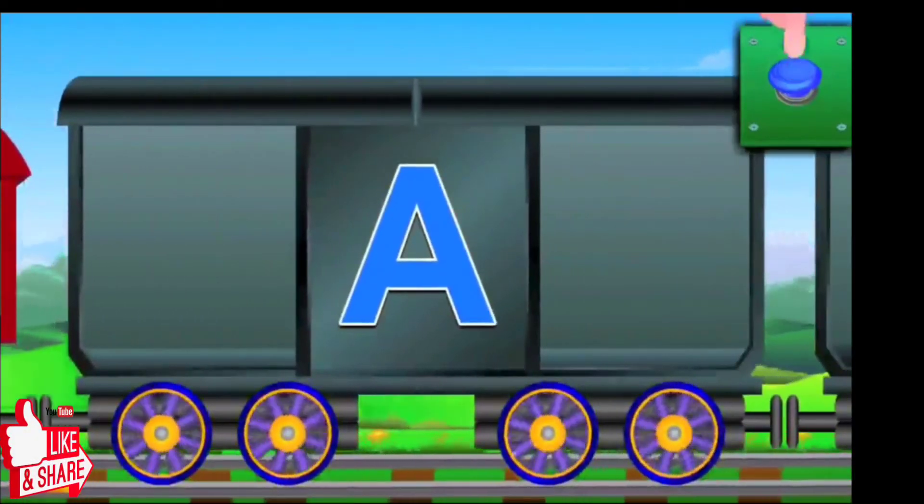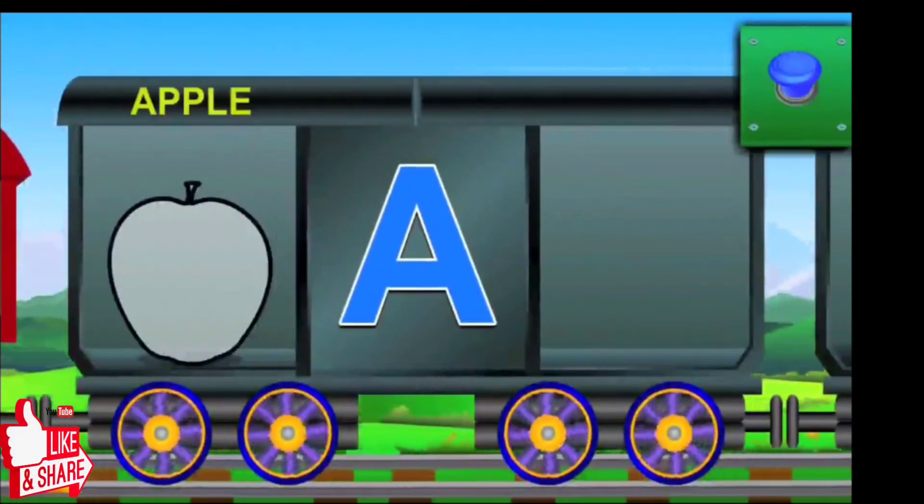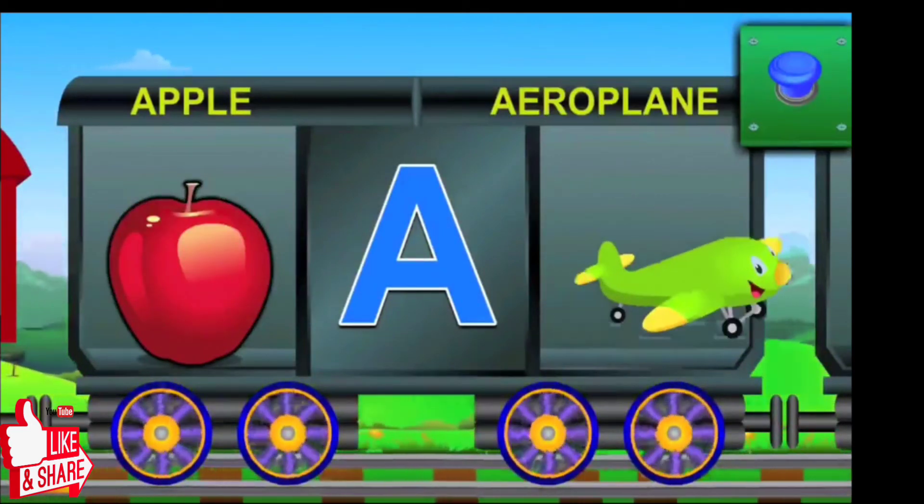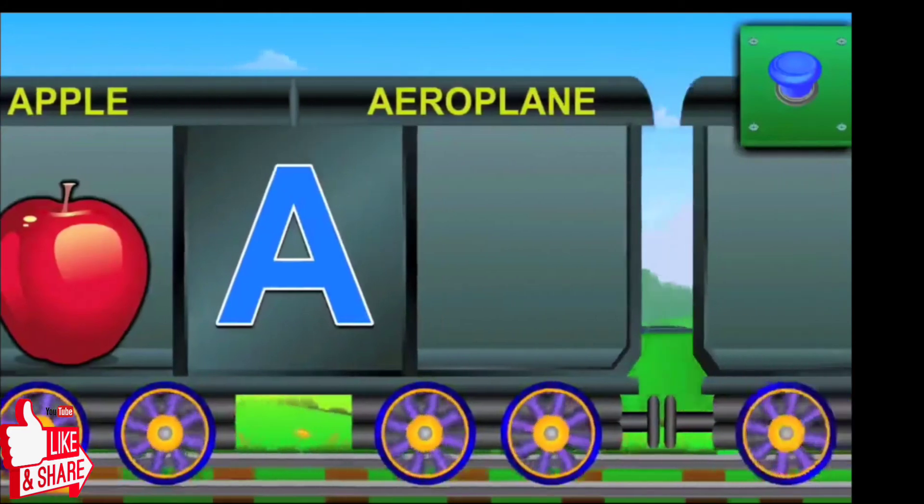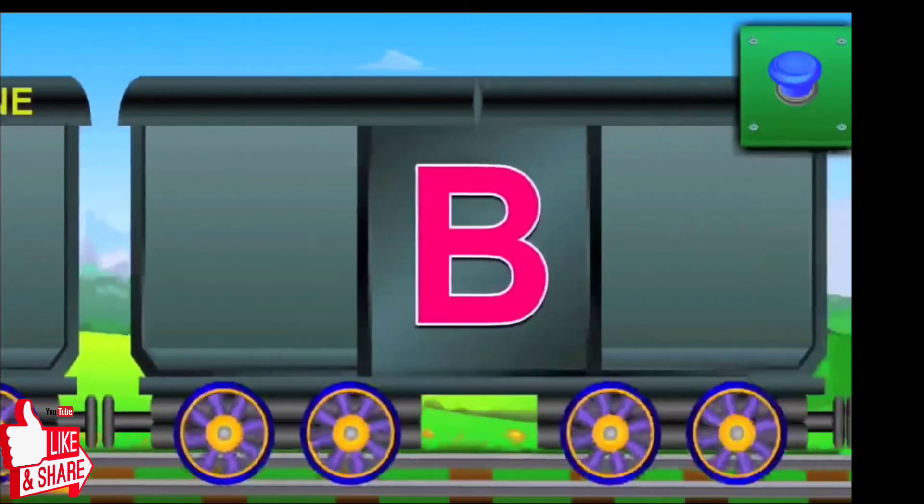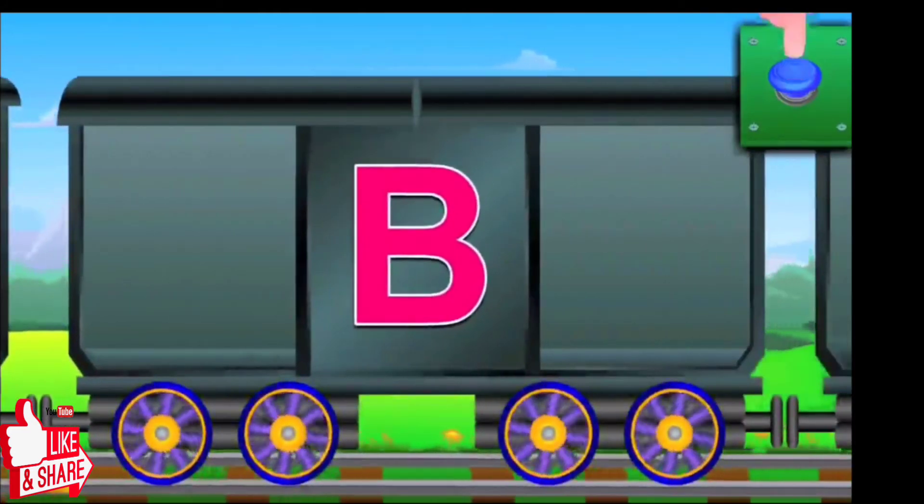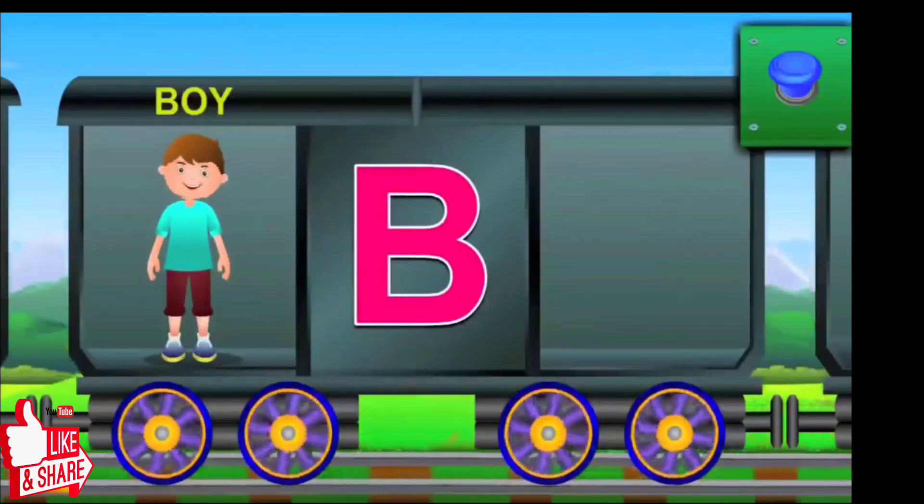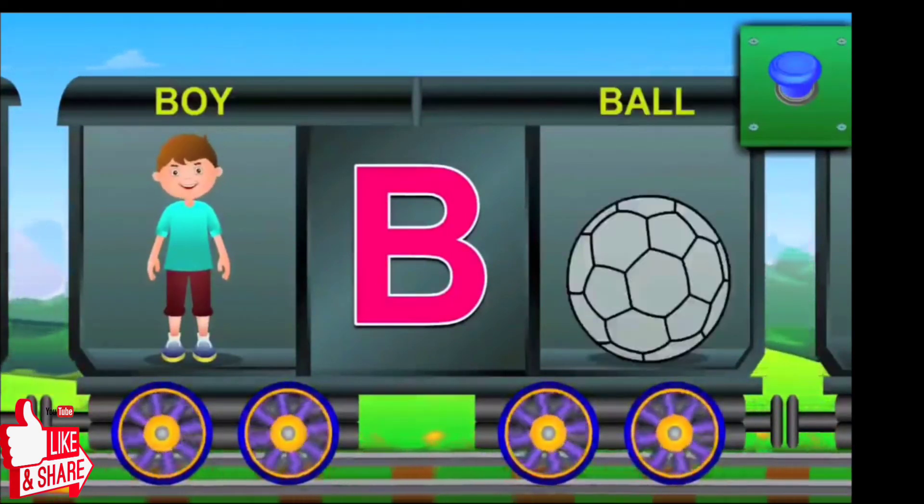A. A is for apple, and the apple is red. A for airplane, and the airplane flies. Here comes B. B for boy, and the boy is cute. B for ball, and the ball is blue.